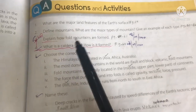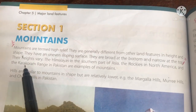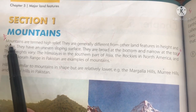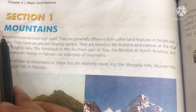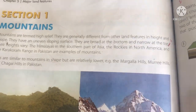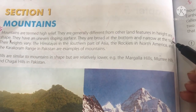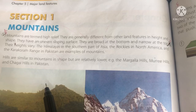The first part is to define mountains. Come towards page 60 for the definition. Mountains are termed as a high relief, starting from that line and ending at 'narrow at the top.' The next part is related to the types — there are three basic types of mountains.